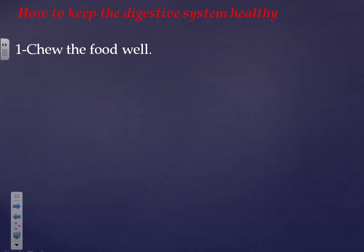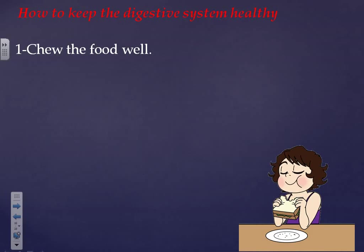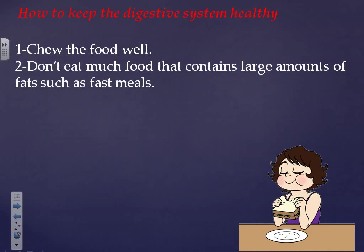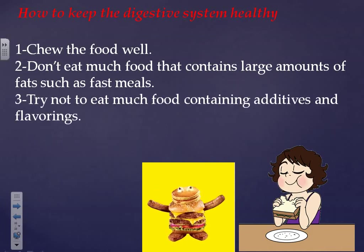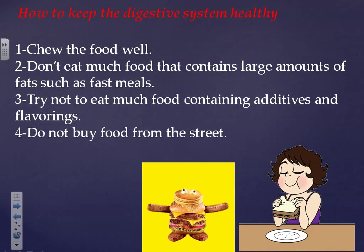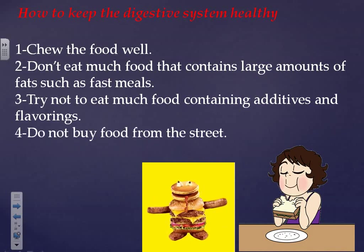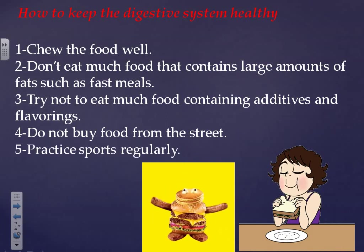How to keep the digestive system healthy: number one, chew your food well. Number two, don't eat large amounts of fatty foods such as fast food. Number three, try not to eat food containing many additives and flavoring. Number four, don't buy food from the street. Number five, practice sports regularly.